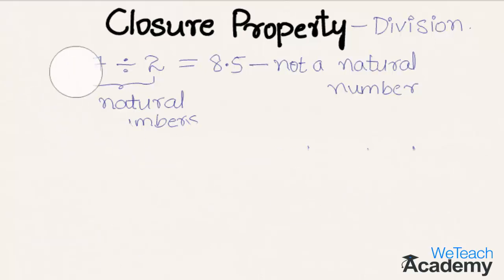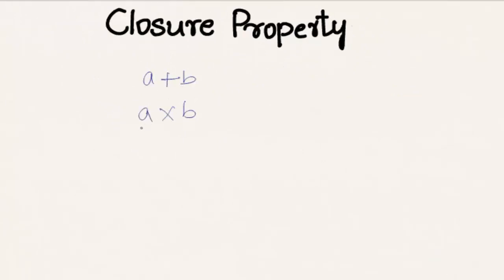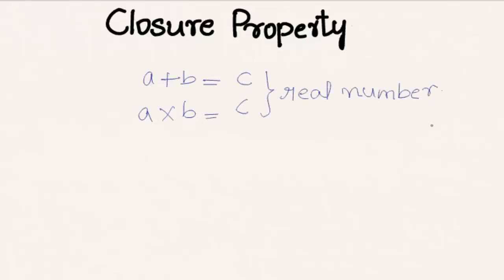In summary, closure property states that if we add or multiply two real numbers, the sum and the product must also be a real number. This was the basic introduction to closure property. Hope you understood the concept.